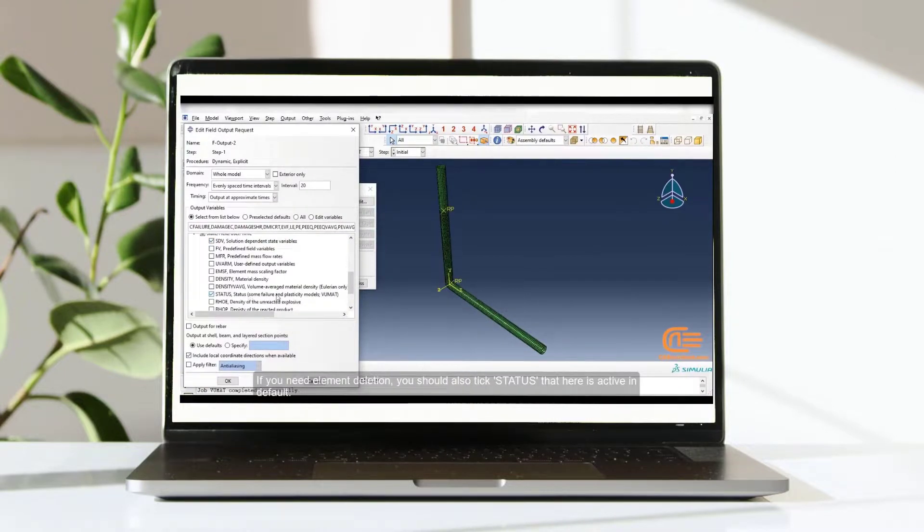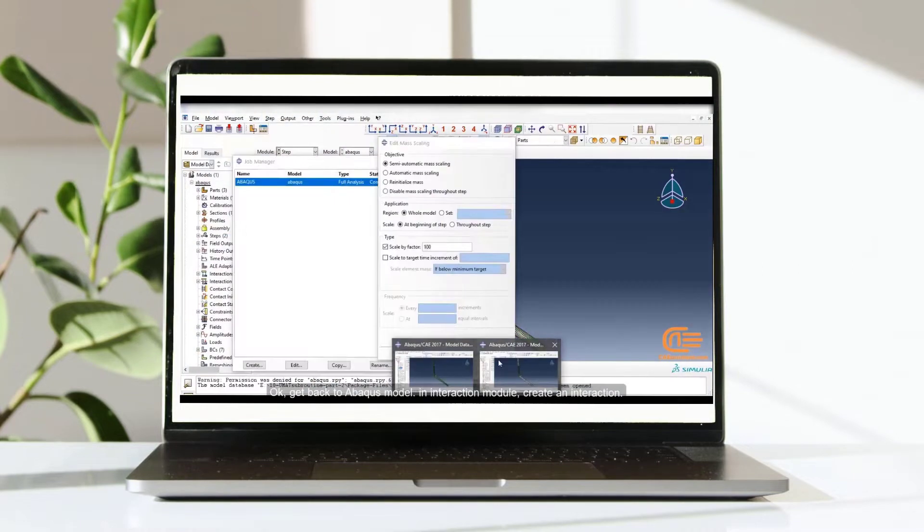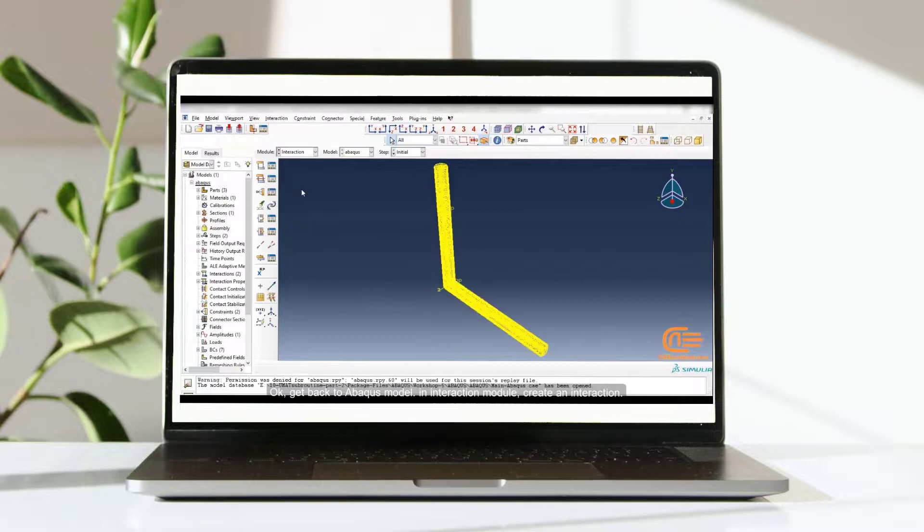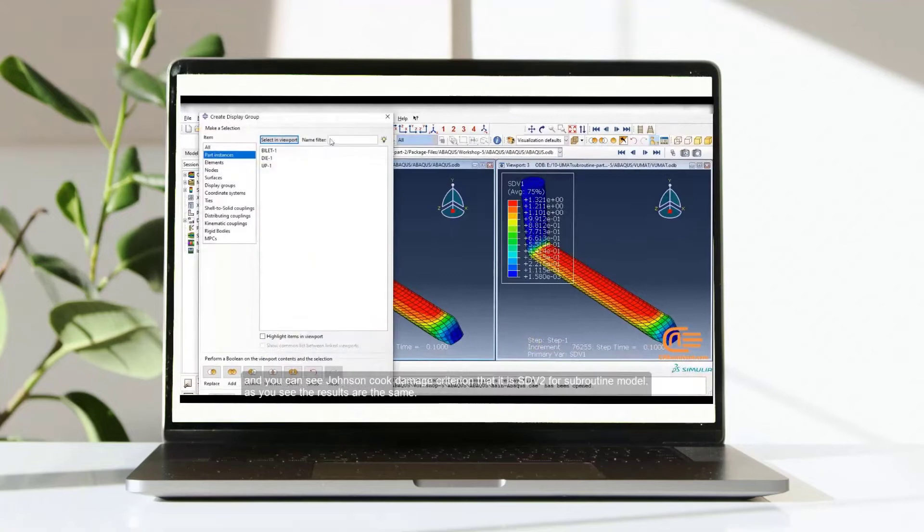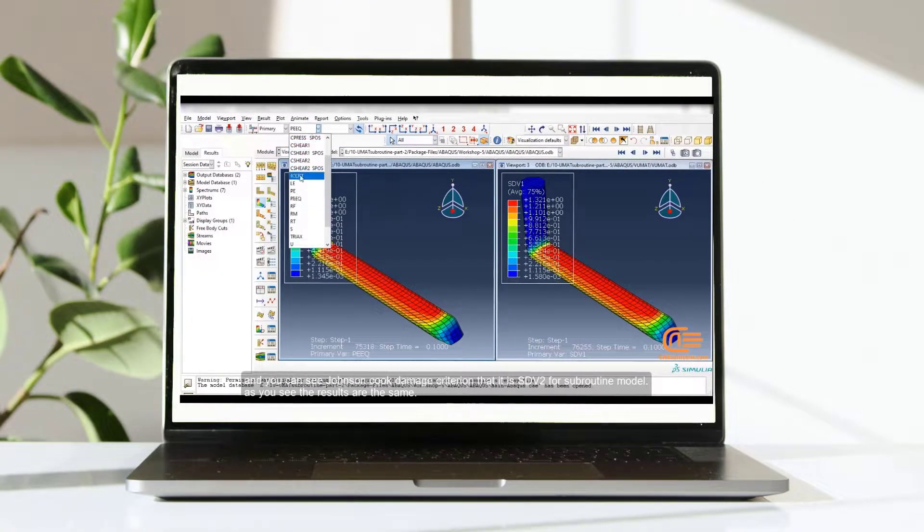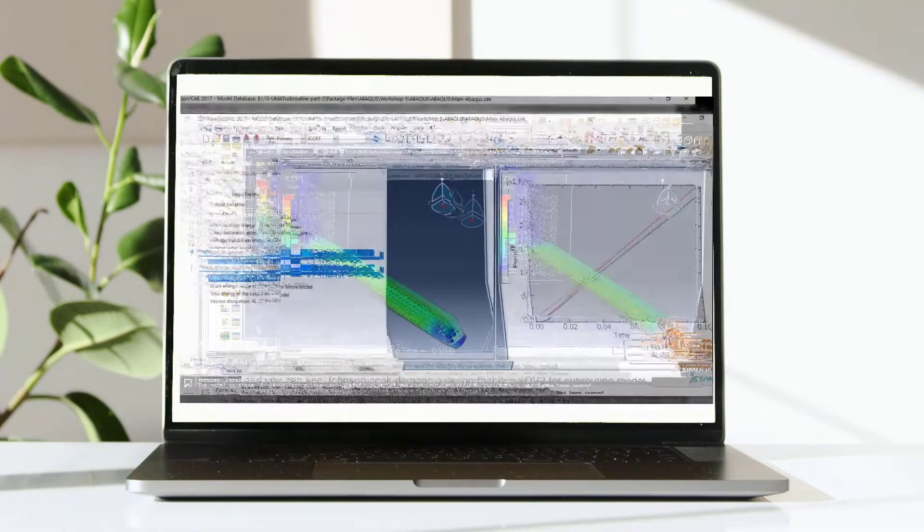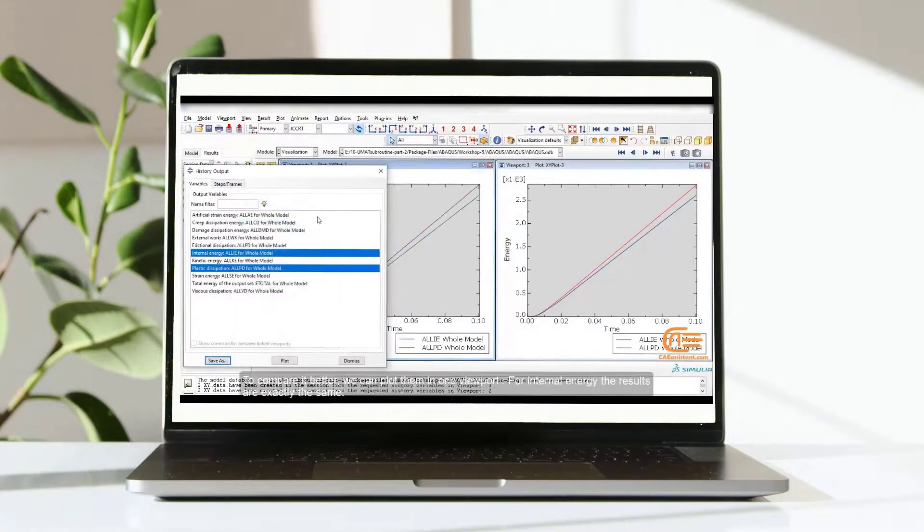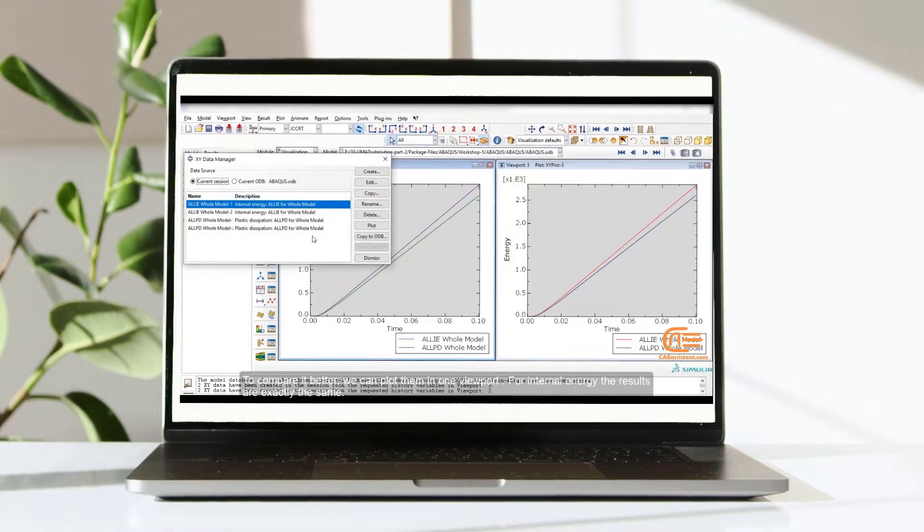If you need element deletion, you should also tick status that here is active in default. OK, get back to Abacus model. In Interaction module, create an interaction. And you can see Johnson & Cook damage criterion that it is SDV2 for subroutine model. As you see, the results are the same. To compare it better, we can plot them in one viewport. For internal energy, the results are exactly the same.